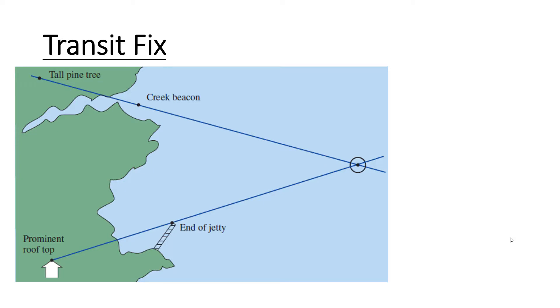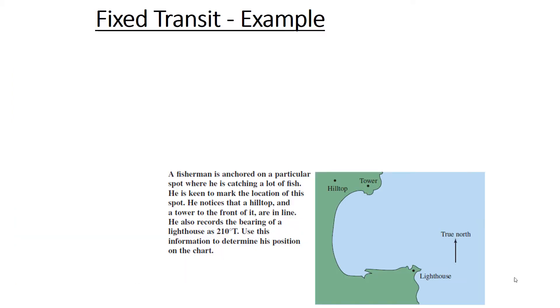So for example in this picture you can see that the vessel is in line with the tall pine tree and the creek beacon, and also the end of the jetty and the prominent rooftop. So we're going to take a look at this example.